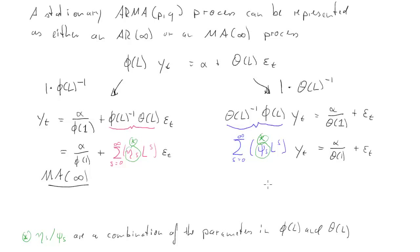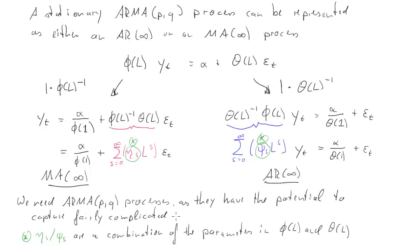What we see here on the right-hand side is really just an infinite AR process, because we get infinite amount of lags for y_t. You may ask the question, why do we need these ARMA(p,q) processes? The resulting coefficients, eta_s or psi_s, they can be quite complicated functions, and they can describe very complicated autocorrelation functions or autocorrelation structures of a time series. This is very useful if we want to describe real time series.